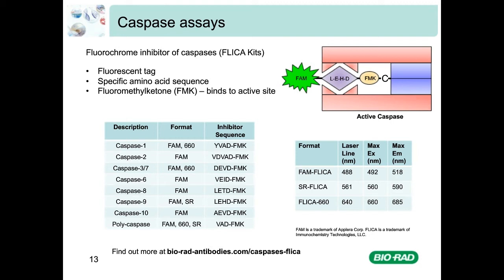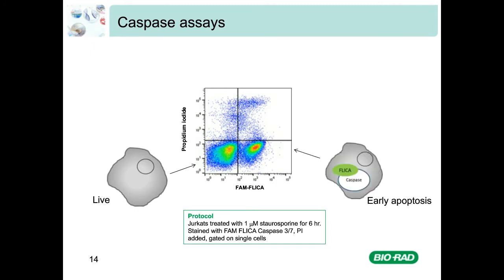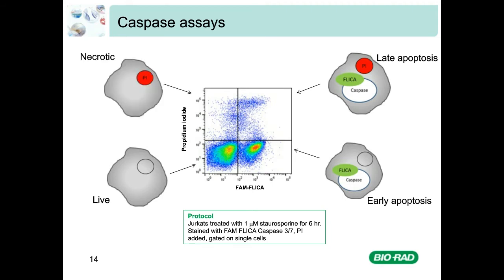In this example, Jurkat cells were treated with staurosporine for 6 hours, then stained with FAM FLICA caspase 3/7 and PI. When FLICA kits are used in combination with a DNA dye such as PI, it allows identification of four different cell states: the live PI/FLICA double-negative population in the bottom left quadrant; the early apoptotic FLICA-positive PI-negative population in the lower right quadrant; the late apoptotic FLICA and PI double-positive population in the upper right quadrant; and the FLICA-negative PI-positive necrotic cells in the upper left quadrant.